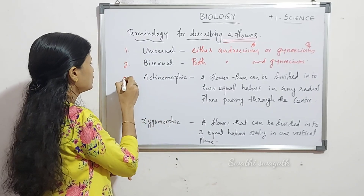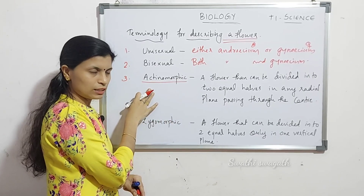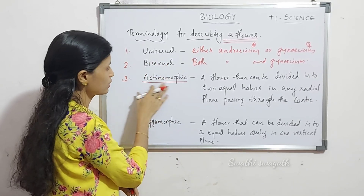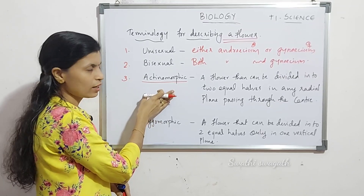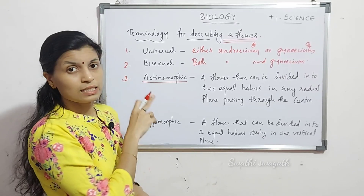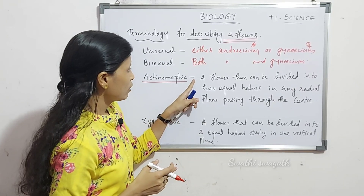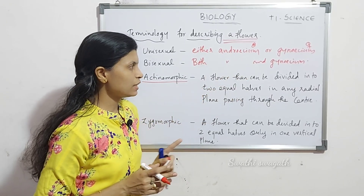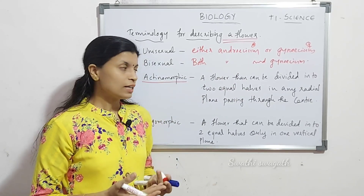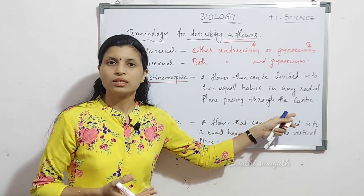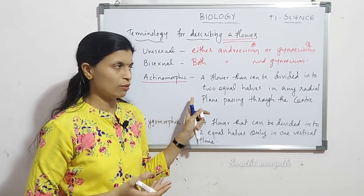The third terminology is actinomorphic. It is a very important term — a new term. Actinomorphic flower means a flower that can be divided into two equal halves in any radial plane passing through the center. This is called an actinomorphic flower.